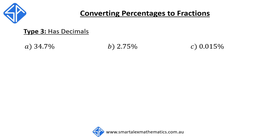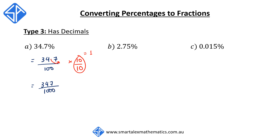The third type involves decimals. Students often get confused with these types, but the strategies are pretty much the same. For question A, 34.7% — our first step is to express this as 34.7 out of 100. We want to convert the numerator into a whole number by multiplying the top and the bottom by 10. This moves the decimal point one place to the right, giving us 347 over 1,000. This can't be simplified, so 34.7% is equal to 347 over 1,000.